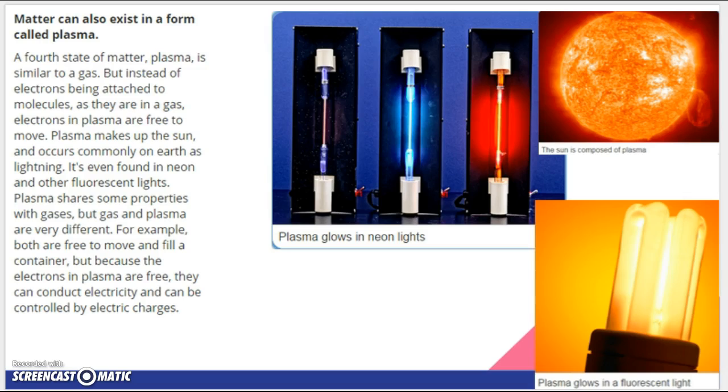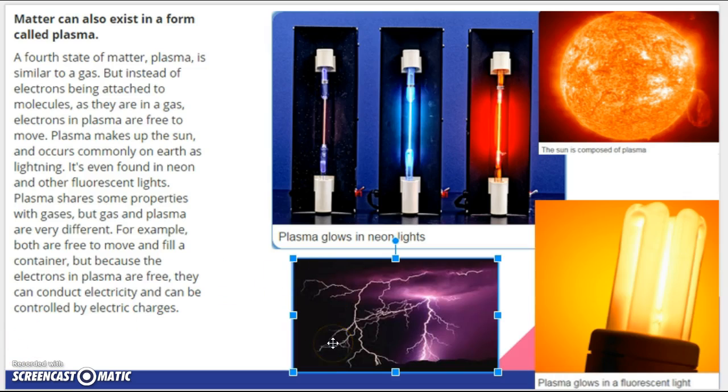So, solid, liquid, and gas are what we're going to focus on, but there is a fourth state of matter, and that, of course, is plasma. The most common place for plasma is the sun. And in fact, all stars are plasma. So, in the universe, plasma is very, very common. On Earth, it's pretty rare. So, some examples on Earth are the plasma glows in neon lights, the plasma glows in fluorescent lights, and of course, lightning.